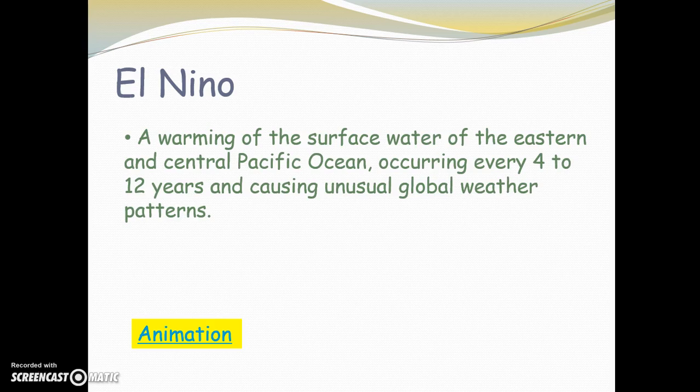Another thing that we need to discuss when we talk about climate is El Niño, and El Niño affects Texas and Mexico, so it's very important that we know what that is. El Niño is a warming of the surface water in the eastern and central Pacific Ocean—that is the ocean that is on the western side of the United States and Mexico. It happens about every 4 to 12 years and causes unusual global weather patterns. El Niño is responsible for the increase in water that we saw this spring, and they say it's going to continue to cause a lot of storms in the upcoming months, all the way through winter.